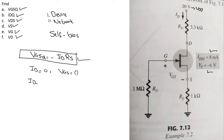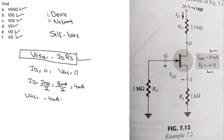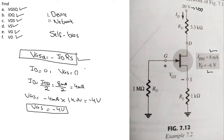The second point is when ID = IDSS / 2. Since IDSS = 8 milliamperes, ID = 4 milliamperes. Then VGS = -ID · RS = -4 mA × 1 kΩ = -4 volts. So when ID is 4 milliamperes, VGS is -4 volts.